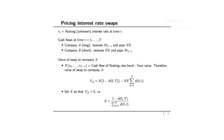Company B, which nominally takes on the short position in the swap, receives the fixed interest rate payment N times X and pays the floating payment N times R_{t-1}. Now we want to compute the value of the swap to Company A. There are two pieces to the cash flow to Company A: it receives the floating principal N times R_0, R_1, R_2, and so on up to R_{T-1} at times 1, 2, 3, up to T.